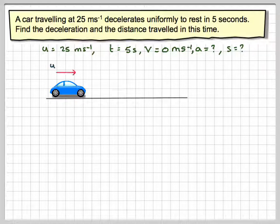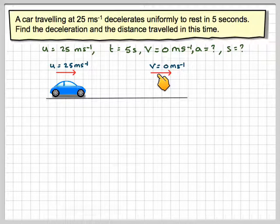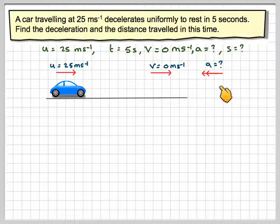We've got a car, the initial velocity of 25 metres per second. Drawing a diagram can actually help. And we know that it's going to come to rest, so V will be equal to 0 metres per second. And then we have acceleration acting in the opposite direction.